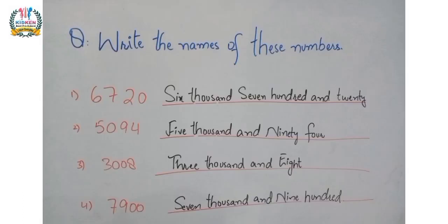So let's start our question and question number one is 6720. Here zero has place value ones, two has place value tens, seven has place value hundreds, and six has place value thousands. So we can write these numbers in words: six thousand seven hundred and twenty.